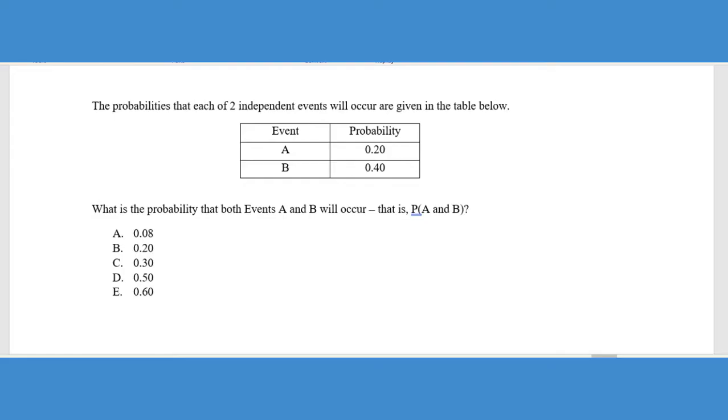The ACT has given us a table of different events and the various probabilities. However, they take our knowledge of probabilities a step further here. It says the probabilities of two independent events will occur are given in the table below. First of all, they throw some vocabulary at us. Independent events just basically means that the two events do not affect each other. So whatever event A is, if I do that, it has no bearing on event B. So independent events basically don't affect each other. It says what is the probability that both event A and B will occur? They gave us this little mathematical thing: probability of event A and B.